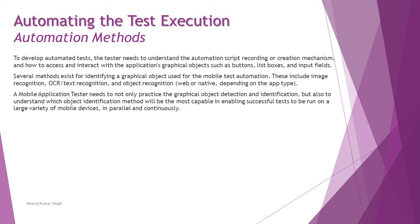Several methods exist for identifying graphical objects used in mobile test automation. These include image recognition, OCR (optical character recognition), and object recognition. This completely depends on the application type — whether it is web or native. A mobile application tester needs to practice graphical object detection and also understand which object identification method will be most applicable for running successful tests across a large variety of mobile devices in parallel and continuously.